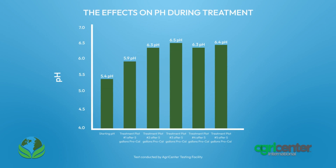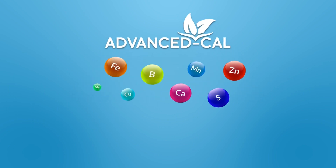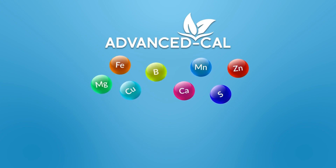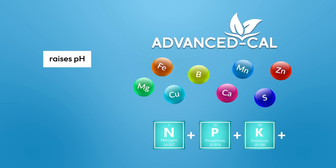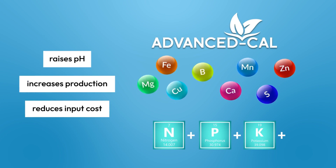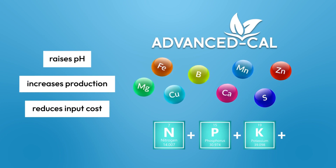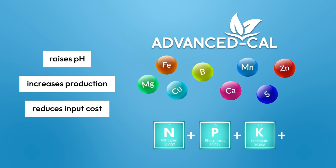Advanced Cal also increases nutrient availability of NPK and crop production. It is a chelated liquid calcium with micronutrients and prebiotic microbial added, designed to increase soil pH and calcium base saturation — the most reliable and affordable way to increase production while diminishing input costs. It is also less expensive and more effective than lime, aerating the soil, improving healthy soil drainage, and assisting plant production of proteins.